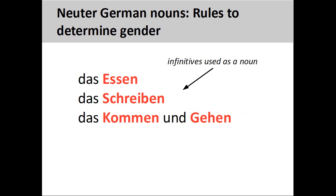All infinitive verbs used as a noun — which requires the first letter of the verb to be capitalized — will be neuter. 'Essen' (food), 'Schreiben' (document or writing), and 'das Kommen und Gehen' (the act of coming and going) are all neuter.